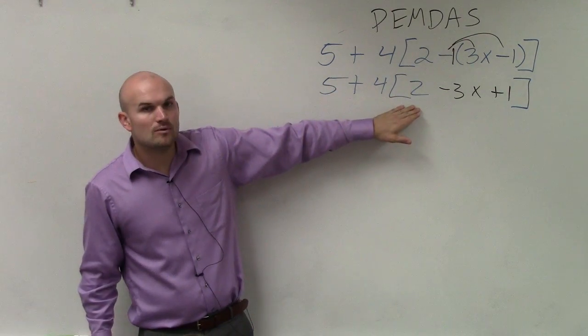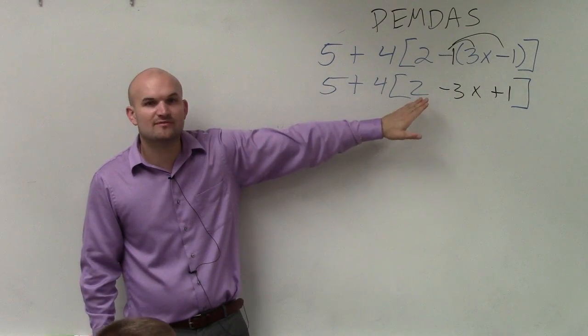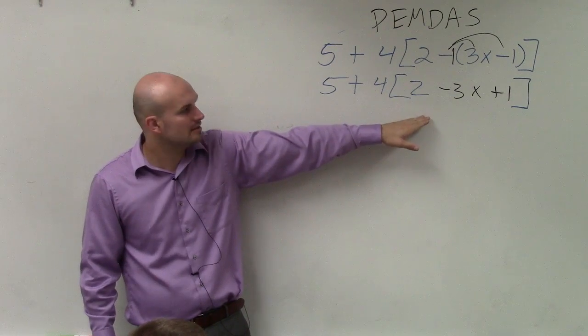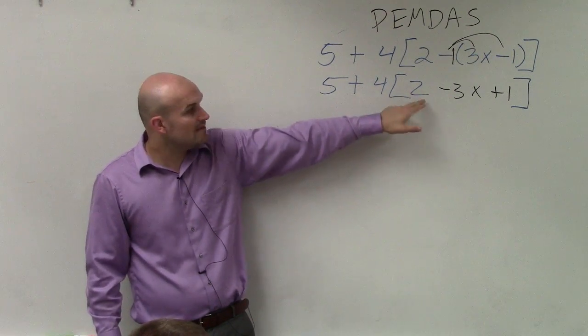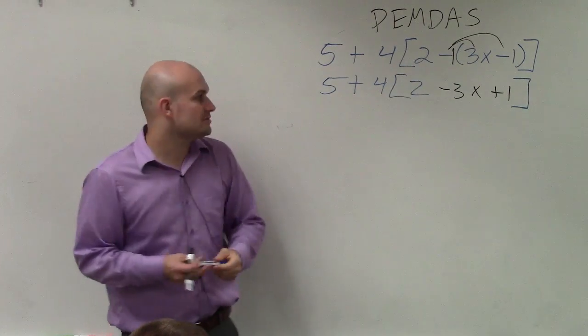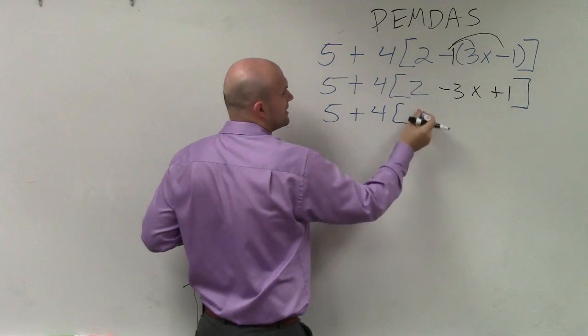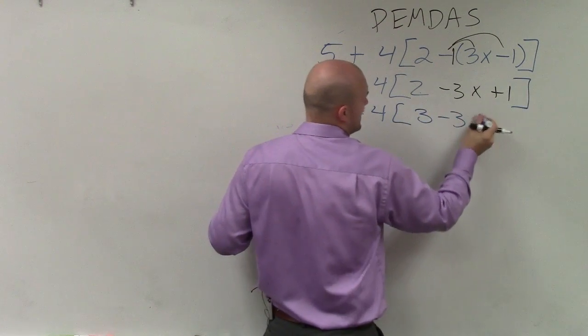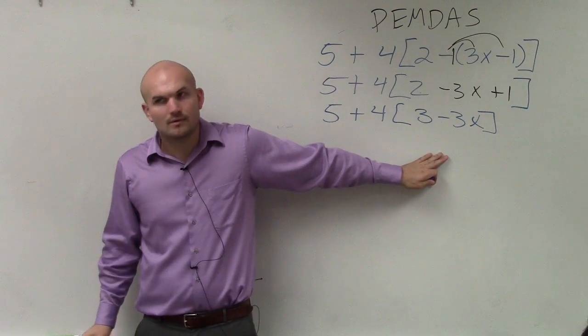So now we go back to following the order of operations. You have inside your parentheses. Can we simplify anything inside these parentheses? Do we have any like terms we can simplify? Yeah, we have the 2 and the 1, right? So now I'll rewrite this as 5 plus 4. 2 plus 1 is 3 minus 3x. Can I combine them anymore? No.